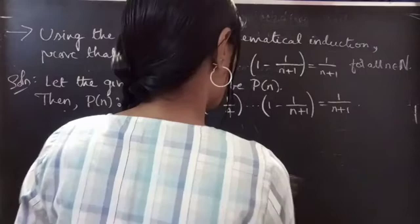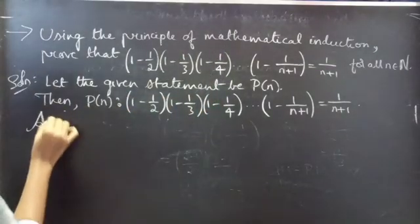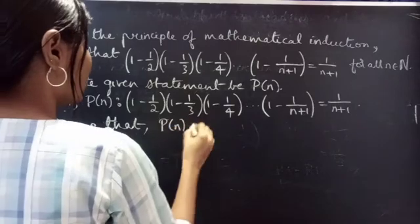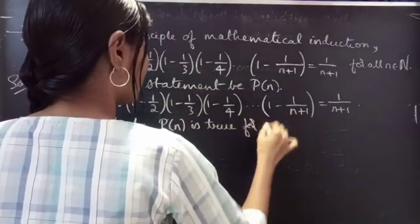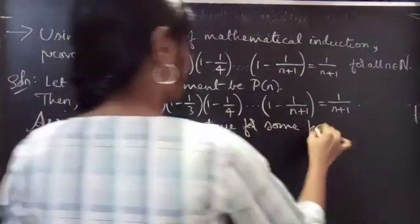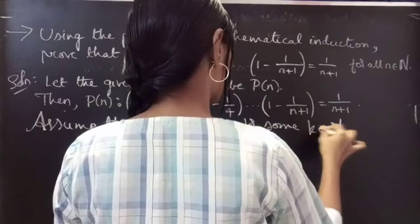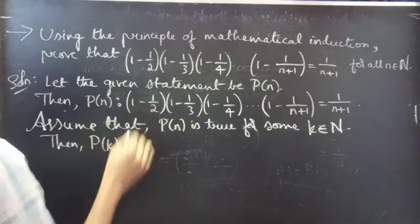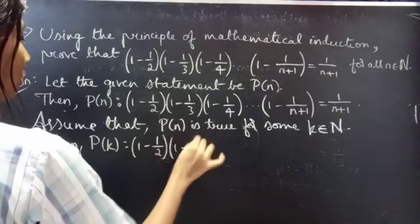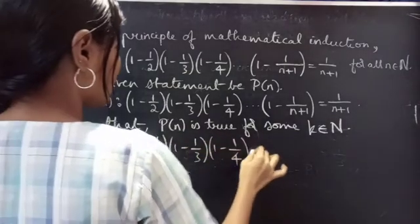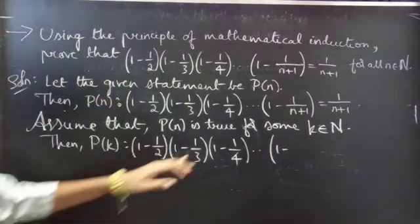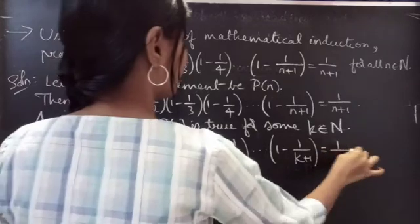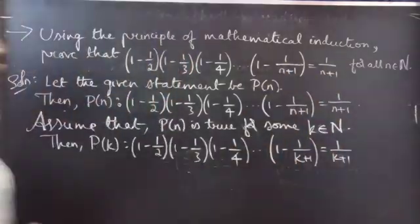Now we assume that P(n) is true for some k belonging to natural numbers. That is, we assume P(k) is true: (1 - 1/2) × (1 - 1/3) × (1 - 1/4) × ... × (1 - 1/(k+1)) = 1/(k+1). Simply replace n by k in the statement for k terms.